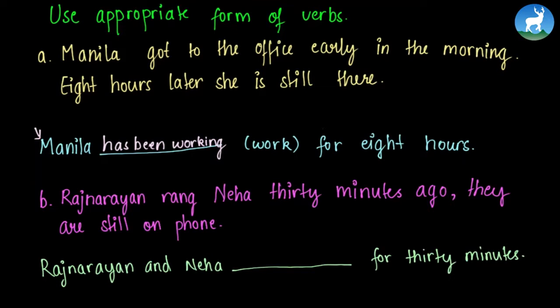The next question is Raj Narayan rang Neha 30 minutes ago. They are still on phone. Now this is similar to the previous one. Raj Narayan did something in the past - he rang Neha 30 minutes ago. And they are still on phone, so right now in the present, the event that occurred in past is still continuing. So we have Raj Narayan and Neha have been talking for 30 minutes. The verb that we needed to use in this sentence was talk, so we use talk as have been talking.